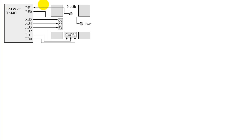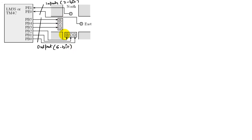We have two inputs and six outputs. Our input is going to be a 2-bit input, and our output is going to be a 6-bit output. The six outputs are our red, yellow, and green lights, and our two inputs are the car sensors in the north and east direction.